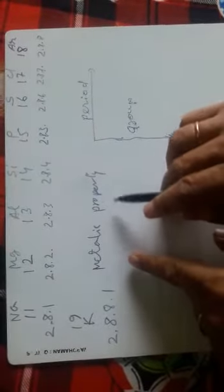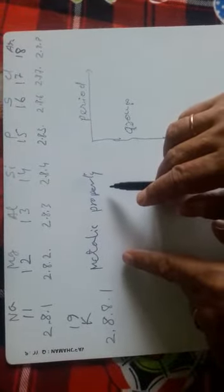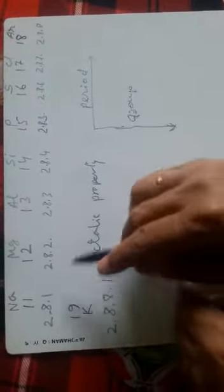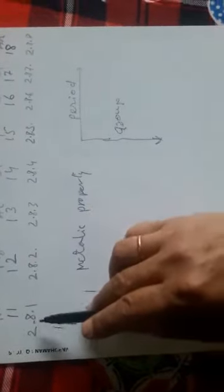Next is how metallic property varies or changes in periods and groups. Here we have taken the same examples, the elements of third period along with the electronic configuration. Metallic property in any period of the elements decreases from left to right as atomic number increases.